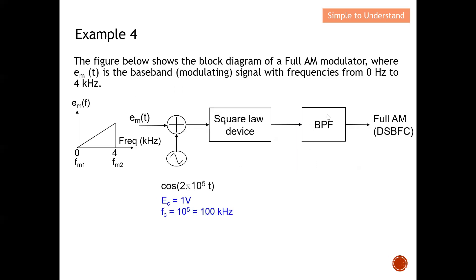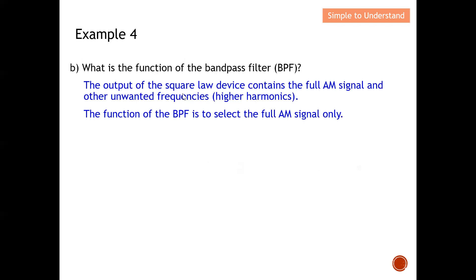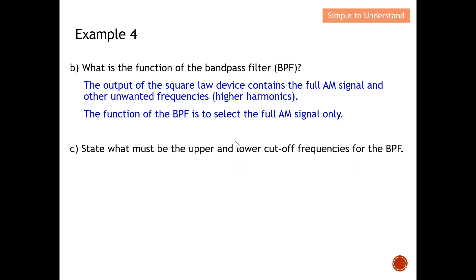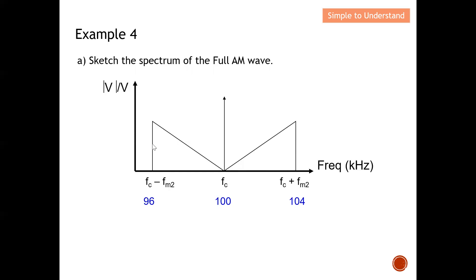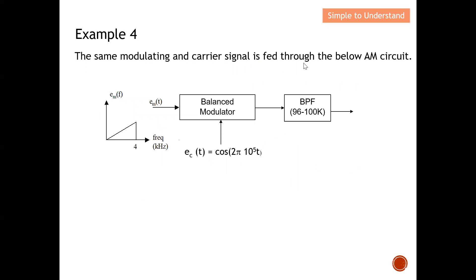Next, what is the function of the band pass filter? The band pass filter can either allow the full band to pass through or allow only one sideband to pass through. The output of the square law device contains the full AM signal and other unwanted frequencies, so the function of the band pass filter is to select only the desired amplitude modulation signal. To pass the full AM wave, the lower cutoff frequency must be 96 kHz and the upper cutoff must be 104 kHz.